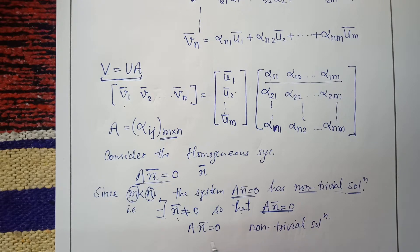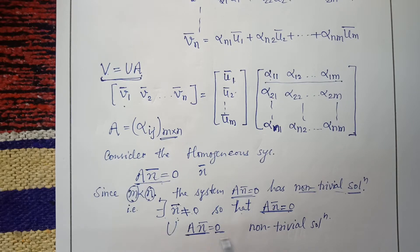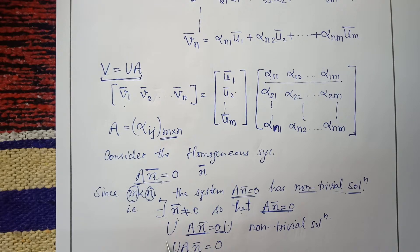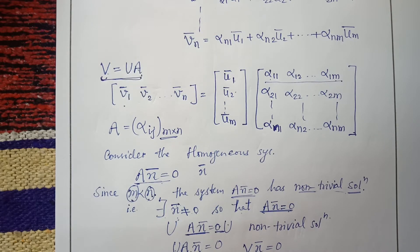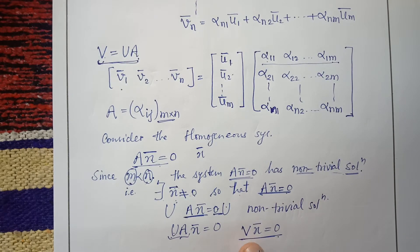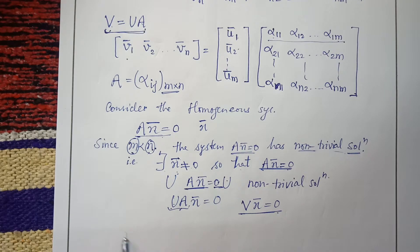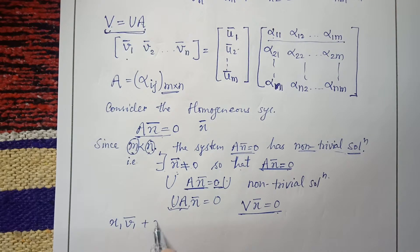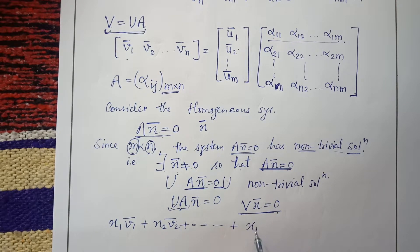Now, multiplying both sides of A * x̄ = 0 by U on the left gives U * A * x̄ = 0. Since U * A = V, this becomes V * x̄ = 0, which means x1 * v1 + x2 * v2 + ... + x_n * v_n = 0.